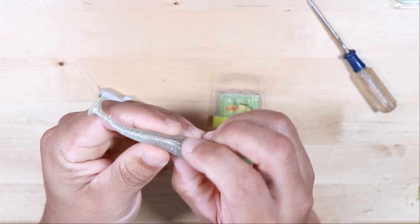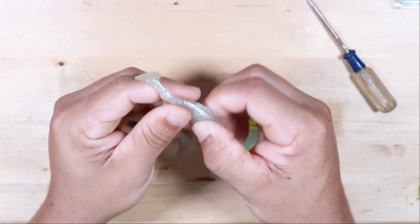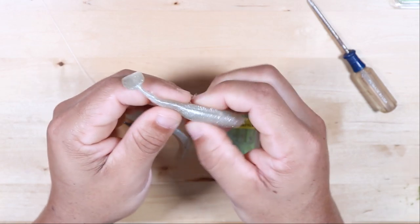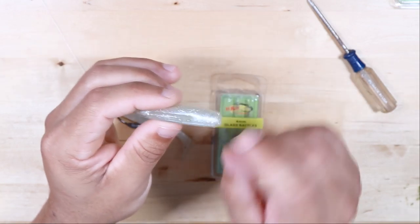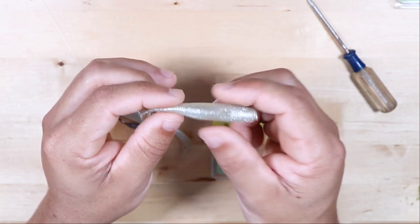Take the rattle, pointed end first, and just push it into that bait. Once it's in there, you can kind of squeeze it a little bit and pinch it to push it down further. As long as the plastic has reformed around behind the rattle, it'll help keep it in there.